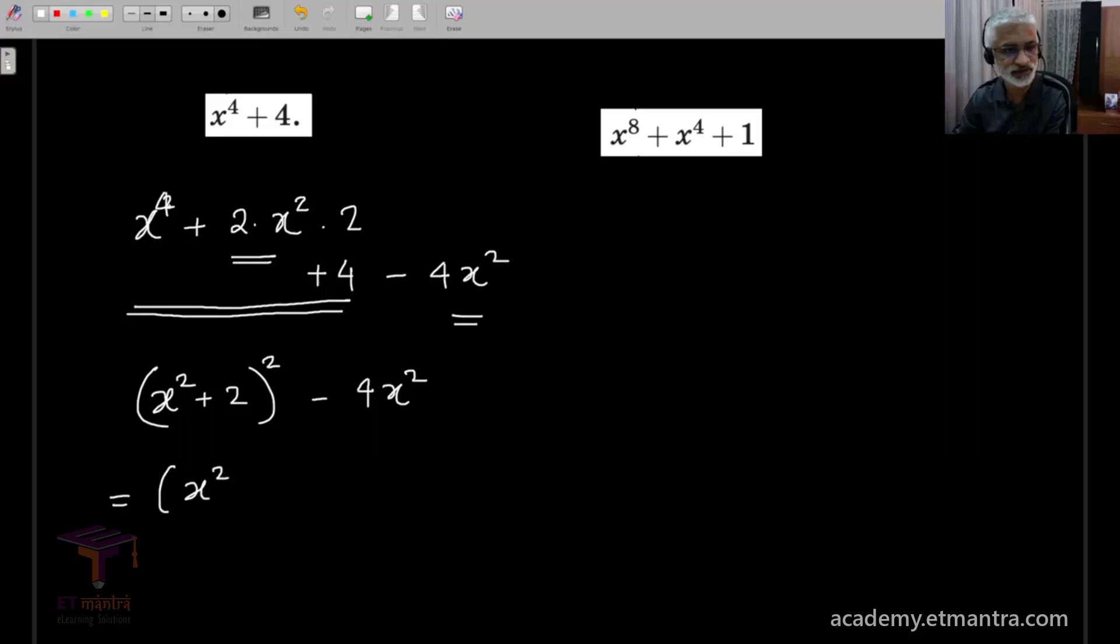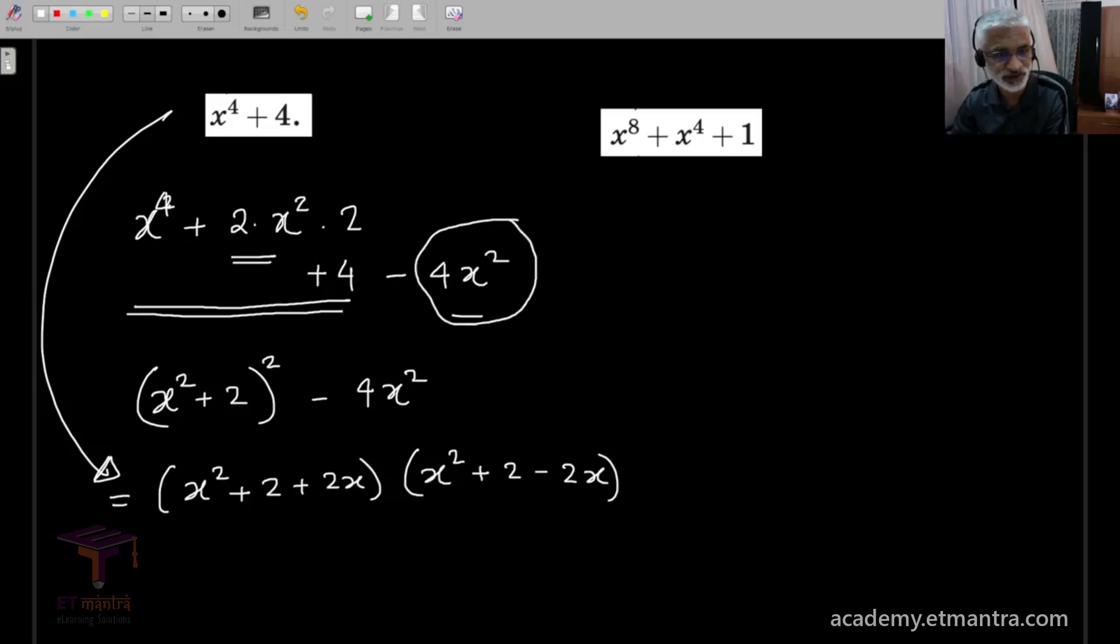x square plus 2 plus 2x multiplied by x square plus 2 minus 2x. So, we have managed to factorize this expression by adding a term to complete the square and subtracting the term, which also turns out to be a perfect square.